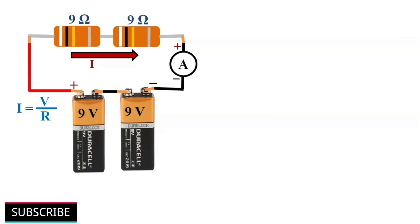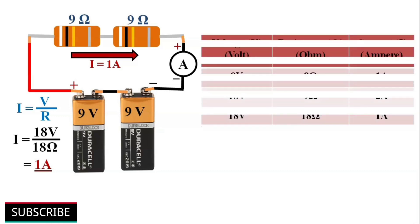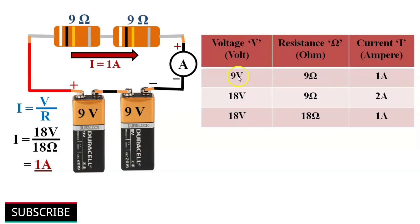If we double the resistance to 18 ohms (9 ohms plus 9 ohms), then the current flowing through the resistor reduces back to 1 ampere. Here is the conclusion: when we doubled the voltage, the current also doubled. When we increased the resistance, the current reduced. This is what Ohm's law states — if you increase voltage in any electric circuit, the current also increases; if you increase the resistance, the flow of current gets reduced.